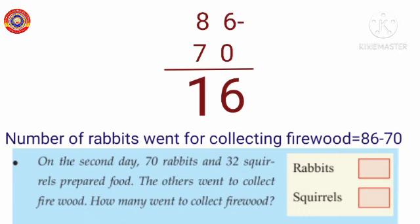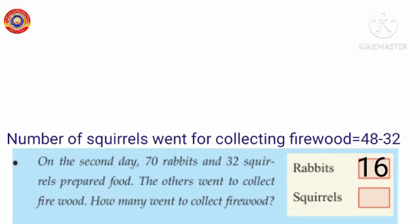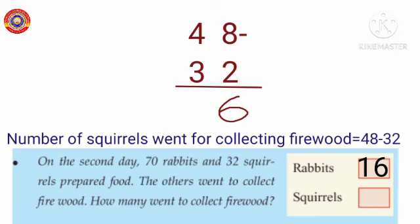Then total number of squirrels equals 48. Number of squirrels cooking equals 32. Number of squirrels went for collecting firewood equals 48 minus 32. 8 minus 2 is 6. 4 minus 3 is 1. 48 minus 32 equals 16.